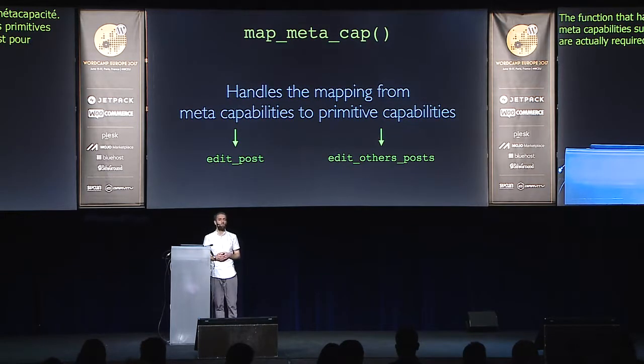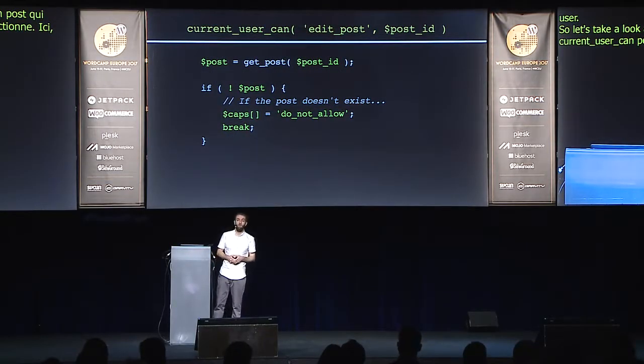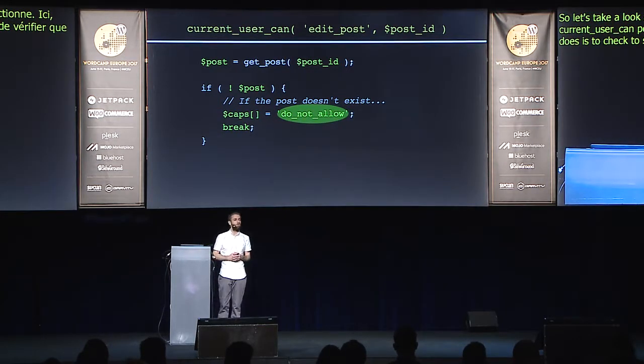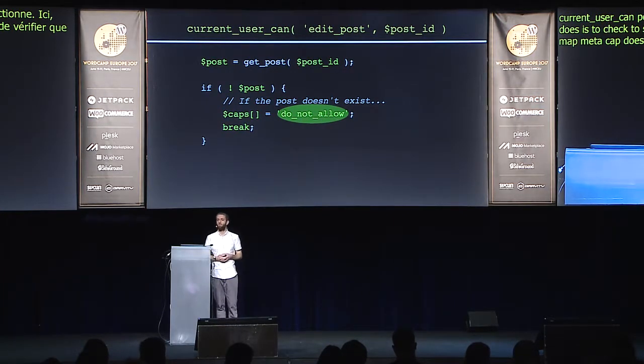Let's see how this works. When calling currentUserCan('edit_post', $post_id), the first thing map_meta_cap does is check whether the post even exists. If it doesn't, it adds 'do_not_allow' to the array of required capabilities — a special capability that no user can have — preventing the action. Further down, map_meta_cap checks if the current user is the author of the post. If the post is published, one required capability is edit_published_posts; if it's a draft or scheduled post, the required capability is edit_posts.